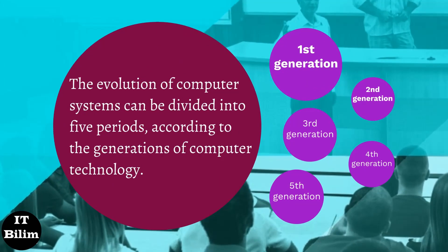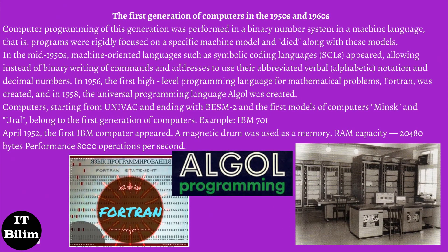The evolution of computer systems can be divided into five periods according to the generations of computer technology. First generation: the first generation of computers in the 1950s and 1960s. Logic circuits were created on discrete radio components and electronic vacuum tubes. Magnetic drums, acoustic ultrasonic mercury and electromagnetic delay lines, and cathode ray tubes were used in operational memory devices. Magnetic tape drives, punch cards, punch tapes, and plug-in switches were used as external storage devices. Computer programming of this generation was performed in a binary number system in machine language; programs were rigidly focused on a specific machine model.